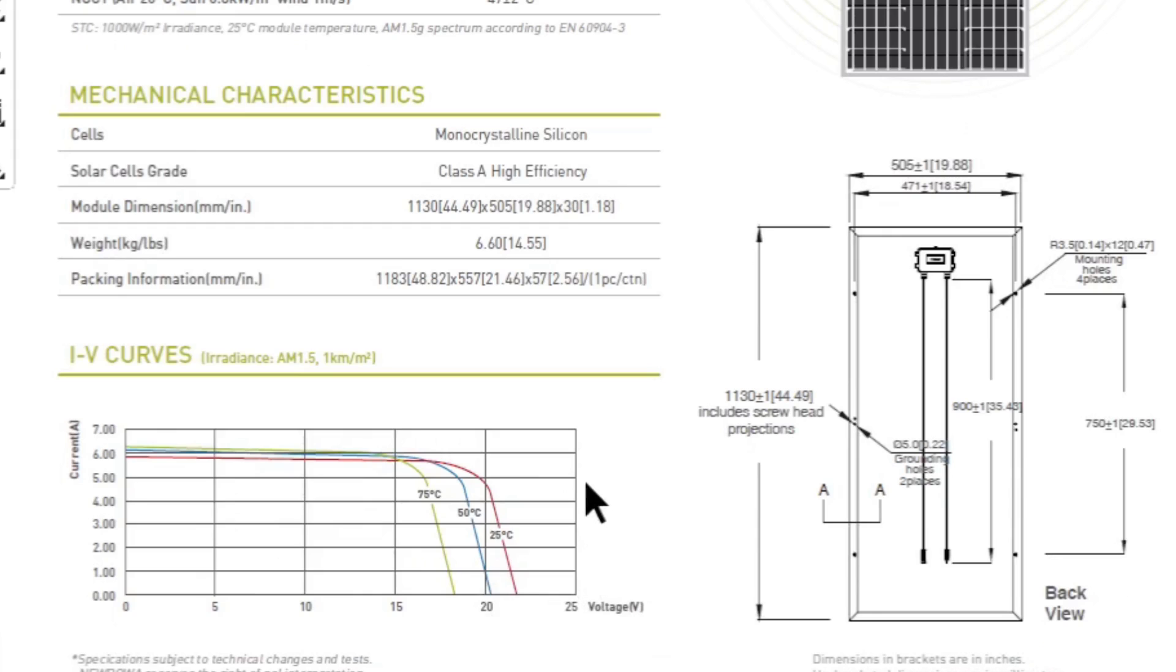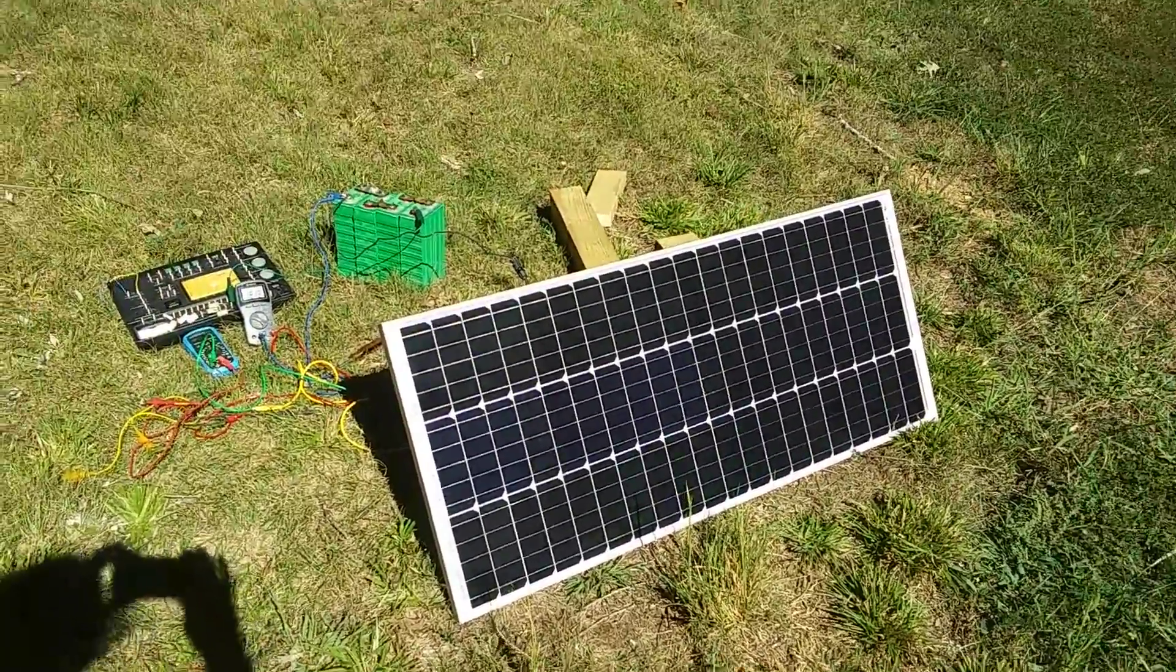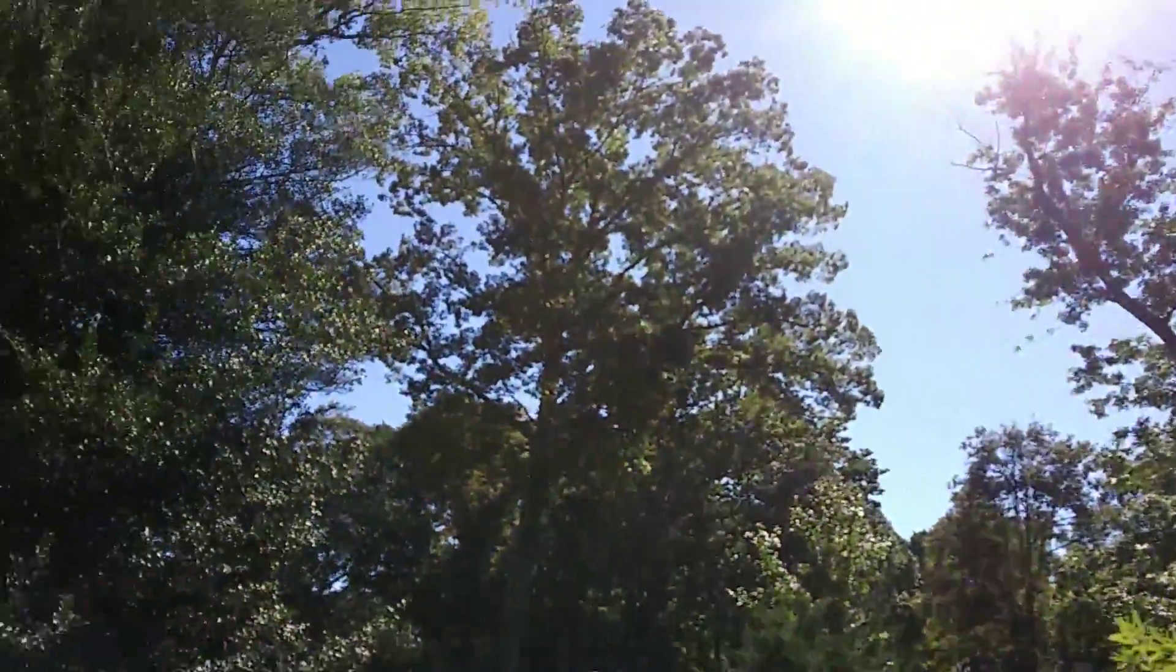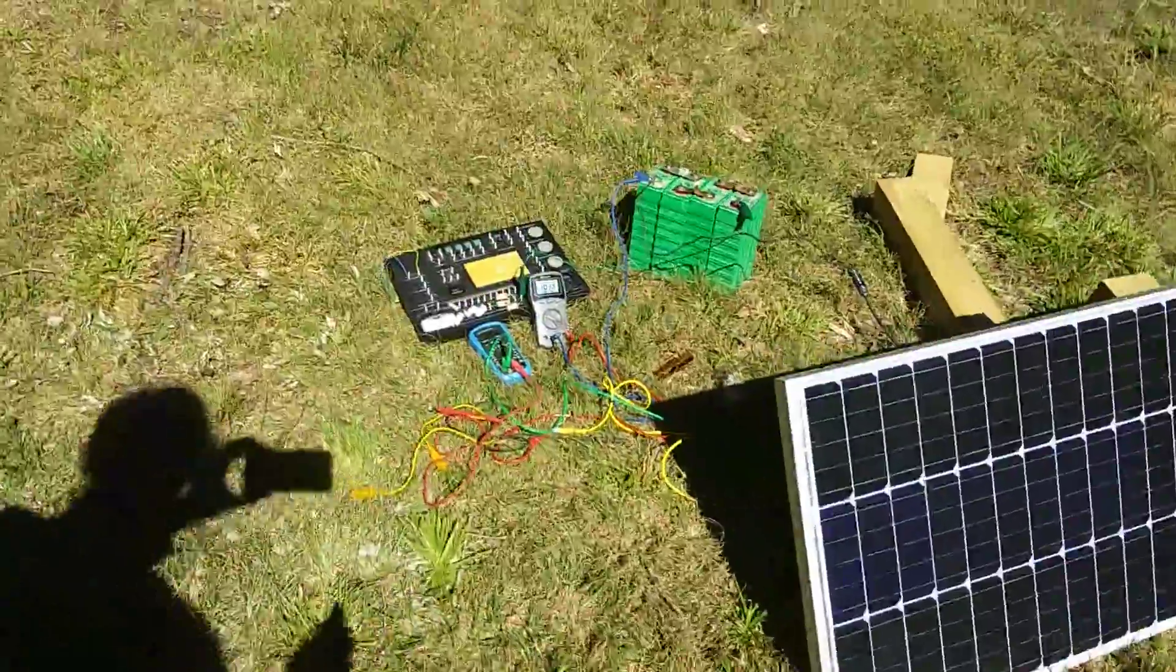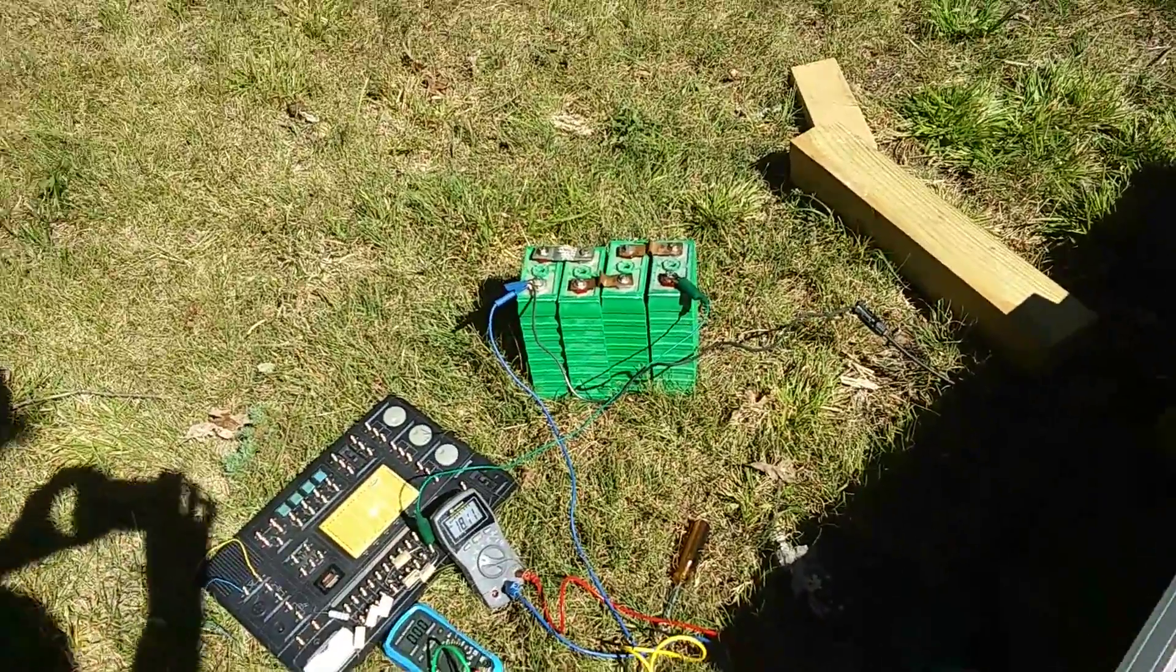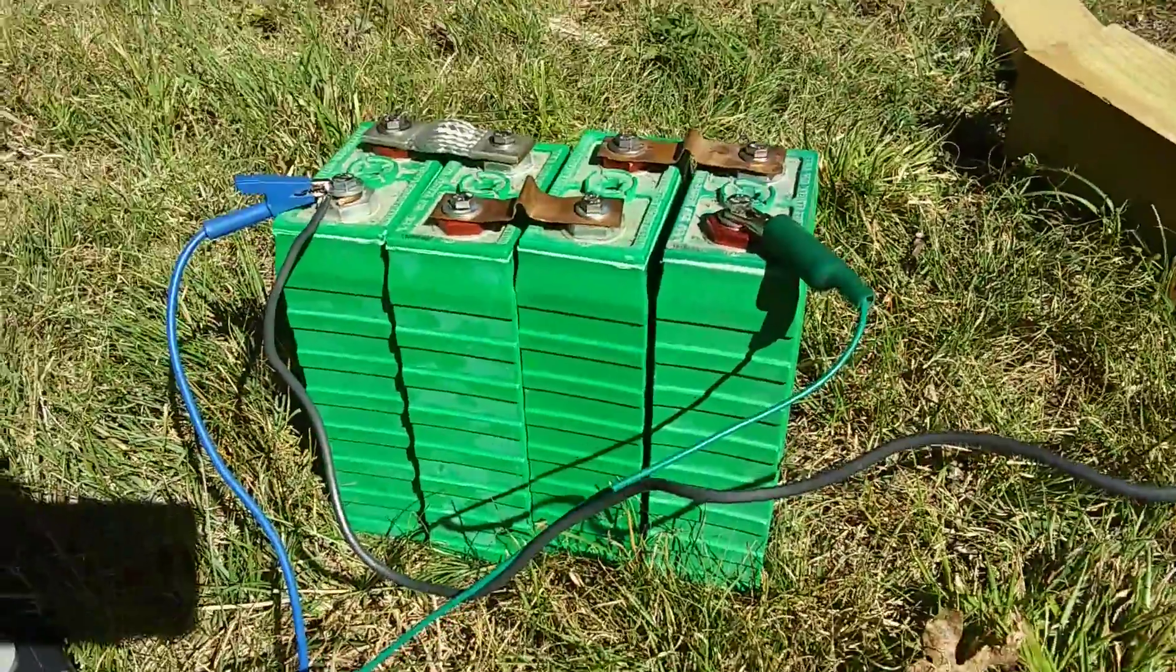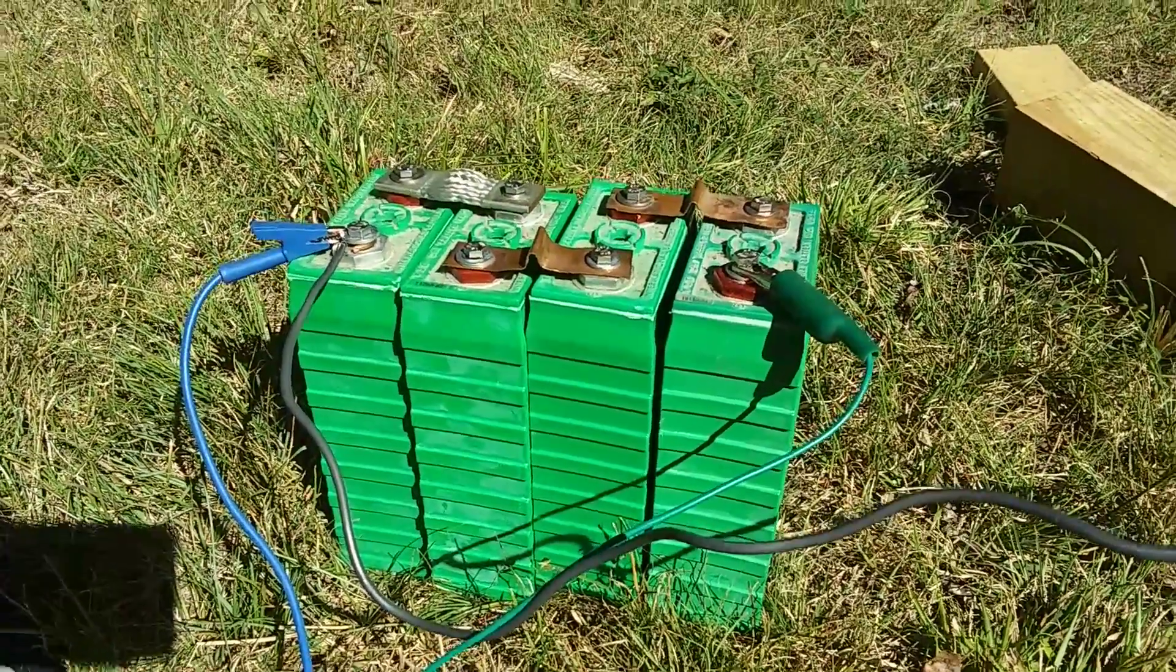So once I got the panels I determined the power curve under actual operating conditions. So here's my setup for checking these panels. I've got one panel out, oriented as close as I can get to perpendicular to the sun. It's a nice sunny day, not a cloud in the sky. And then to dissipate the power, it's really hard to dissipate 100 watts at 3 ohms, which is about what you need. So instead I'm going to dissipate most of the power by charging batteries, and these are batteries exactly the same as the ones in the EV that I eventually want to charge.